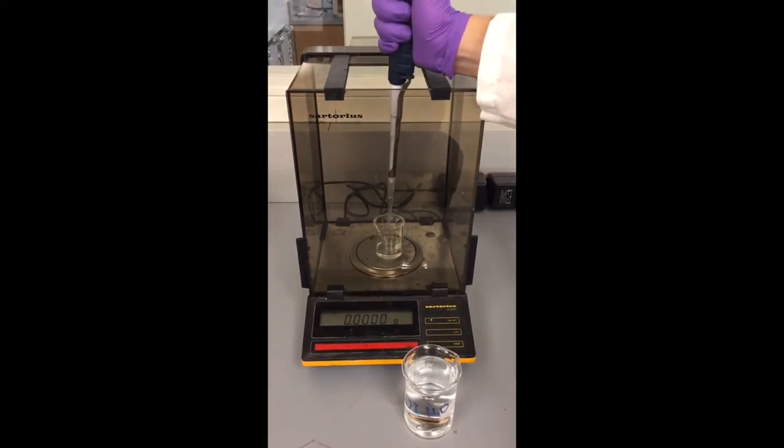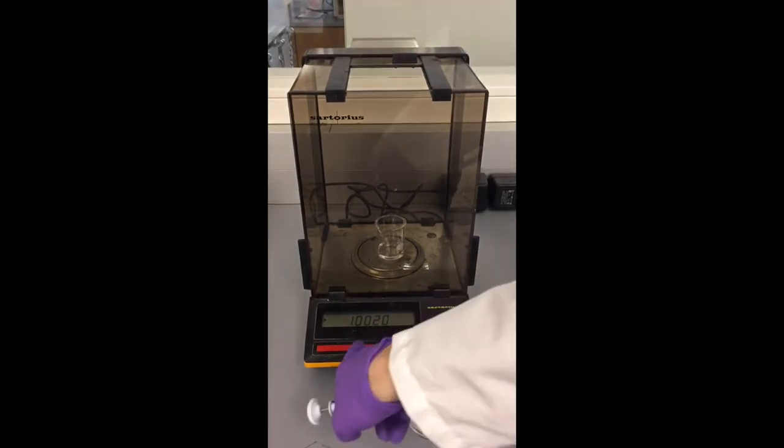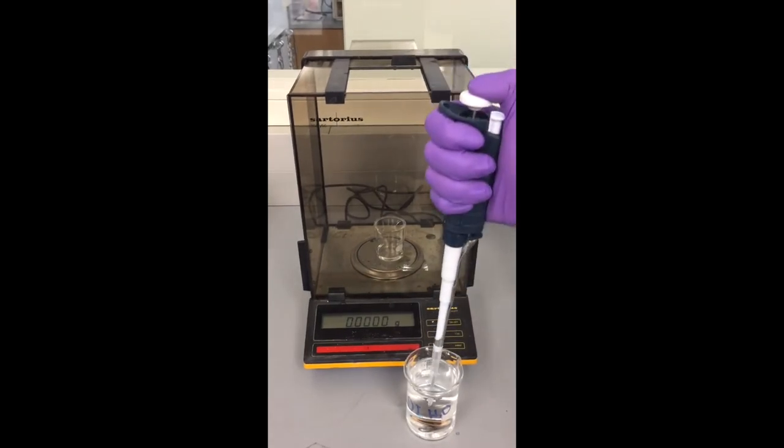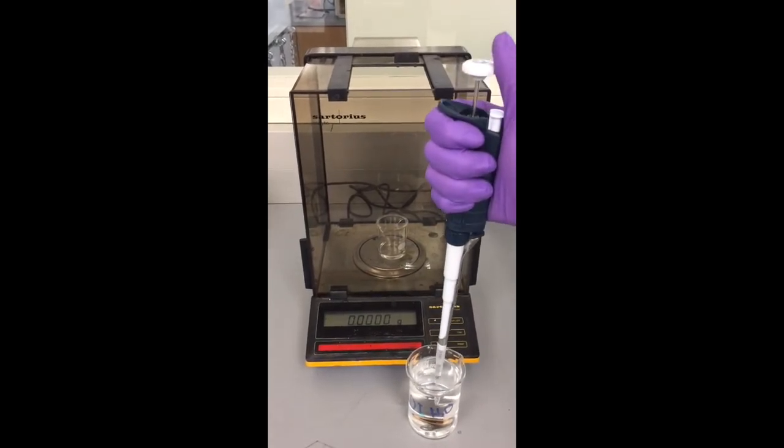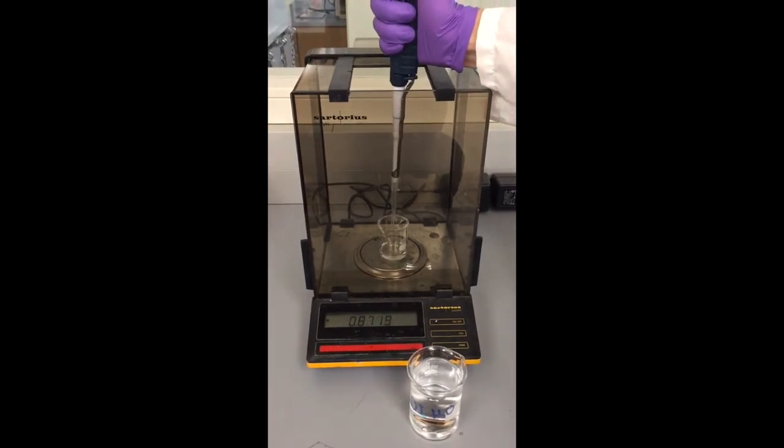For our calibration, we set the micropipet to 1000 microliters. You will need to repeat this step 3 times and make sure to zero the balance in between each time. If your micropipet is consistently more than 5% different than the expected weight of the water, ask your teacher for help adjusting your micropipet.